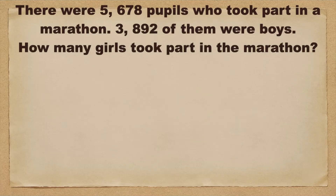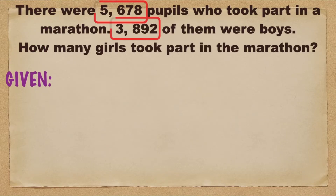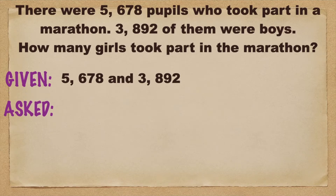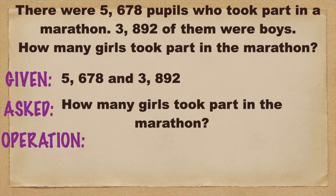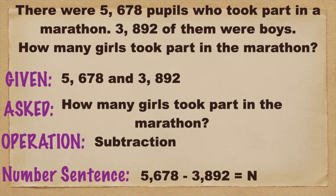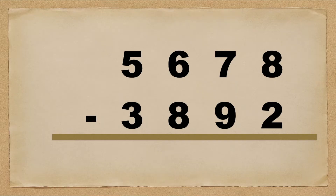Let's have the next problem. There were 5,678 pupils who took part in a marathon. 3,892 of them were boys. How many girls took part in the marathon? Let's find the given: we have 5,678 and 3,892. What is asked in the problem? How many girls took part in the marathon? What operation are we going to use? That's correct — it's subtraction. Let's write the number sentence: 5,678 minus 3,892 is equal to n. Don't forget to align the numbers according to their place value.